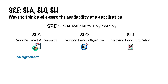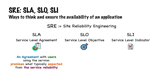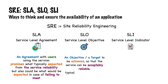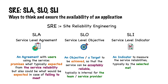SLA is an agreement with users of the service — normally promises that are typically expected from the service, including liability, but also what would be expected in case of failure. SLO is an objective or a target to be achieved so that the service can be acceptably reliable; it is typically internal for the team or service provider. SLI is an indicator to measure the system reliability, typically by selected metrics.